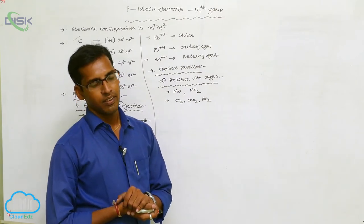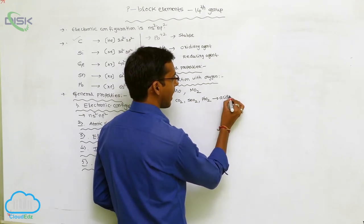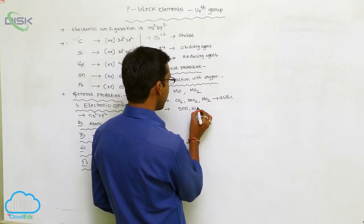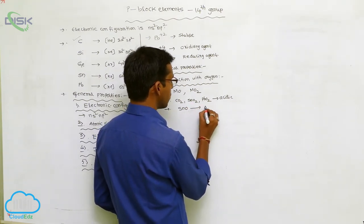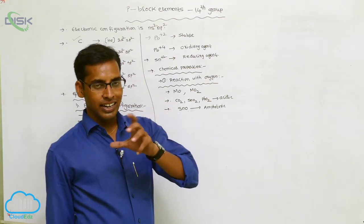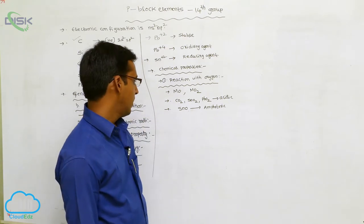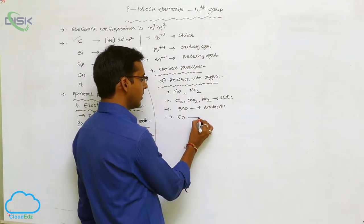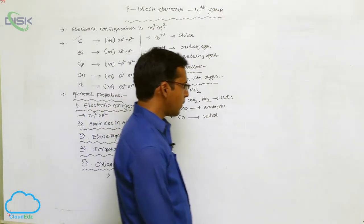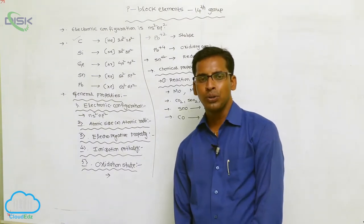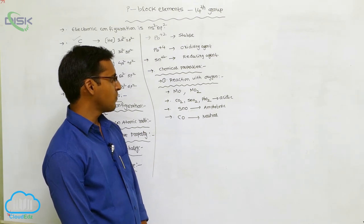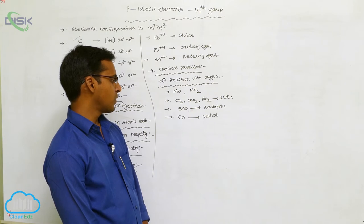The oxides of Group 4A elements show acidic character. SnO or SiO₂ shows amphoteric nature — meaning it exhibits both acidic and basic character. SnO and carbon monoxide exist as neutral compounds. So the oxides formed by Group 4A elements show different characteristics: acidic, amphoteric, or neutral.